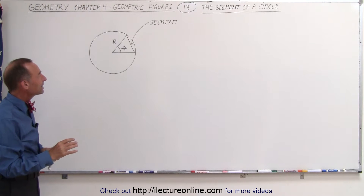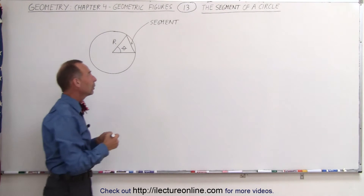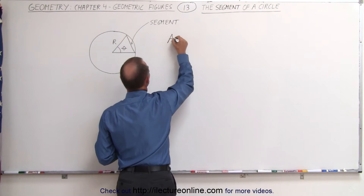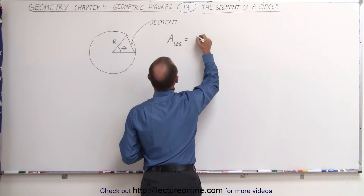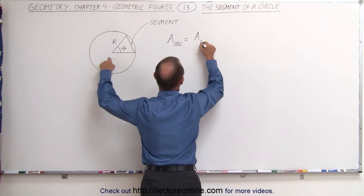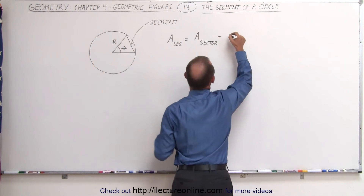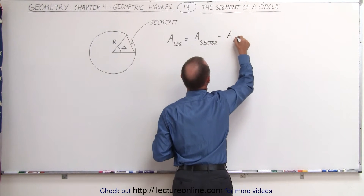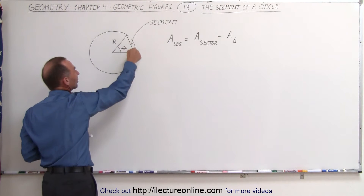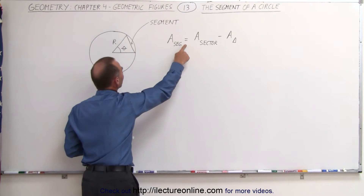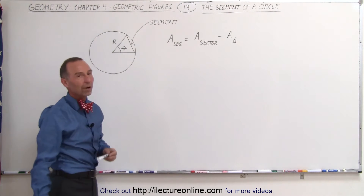What if we want to find the area of the segment of the circle? The area of a segment is equal to the area of the sector minus the area of the triangle. So to find the area of the segment, I take the area of the entire sector and subtract the area of the triangle.